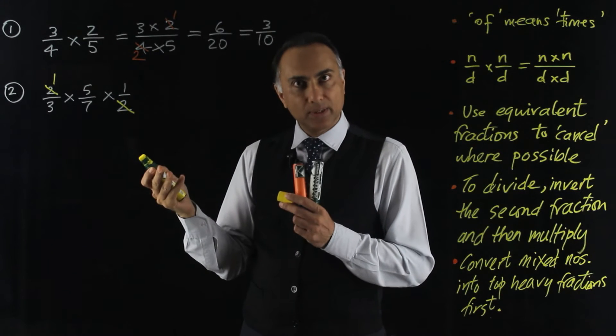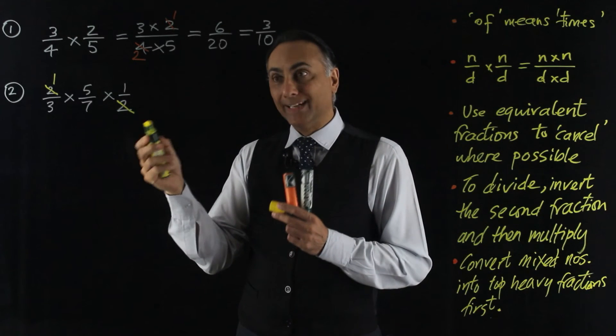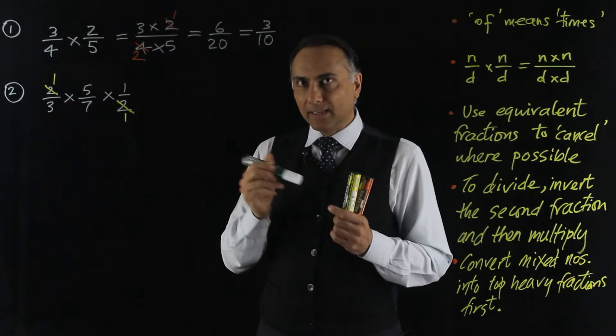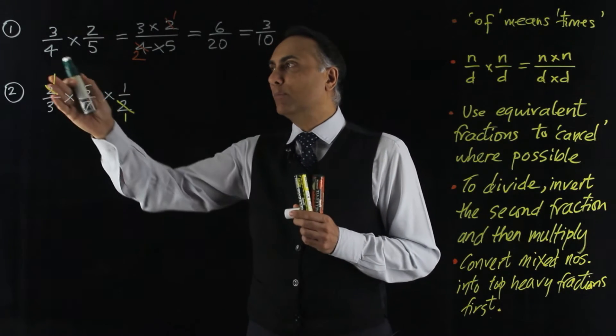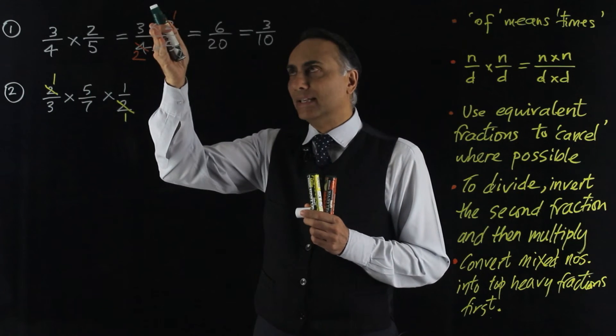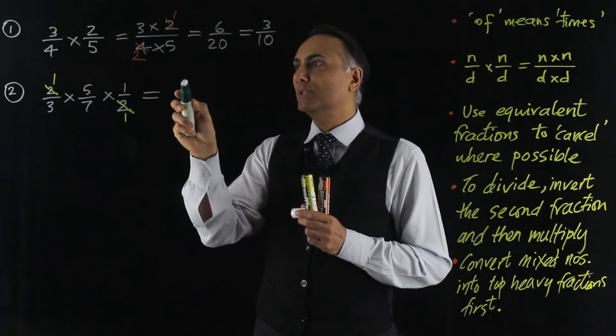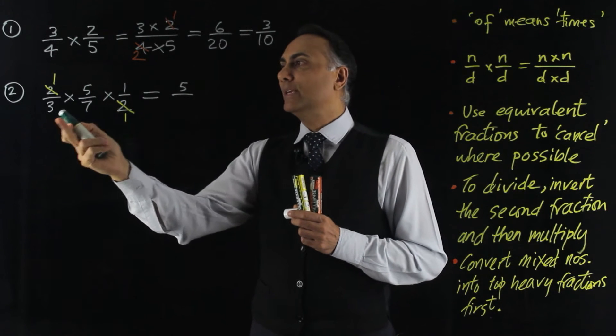And I must do the same thing to the denominator, divide it by 2, and that reduces it also to a 1. Having done that, I can now multiply out the numerators like I did here. I can simply jump to 1 times 5 times 1, which is 5.